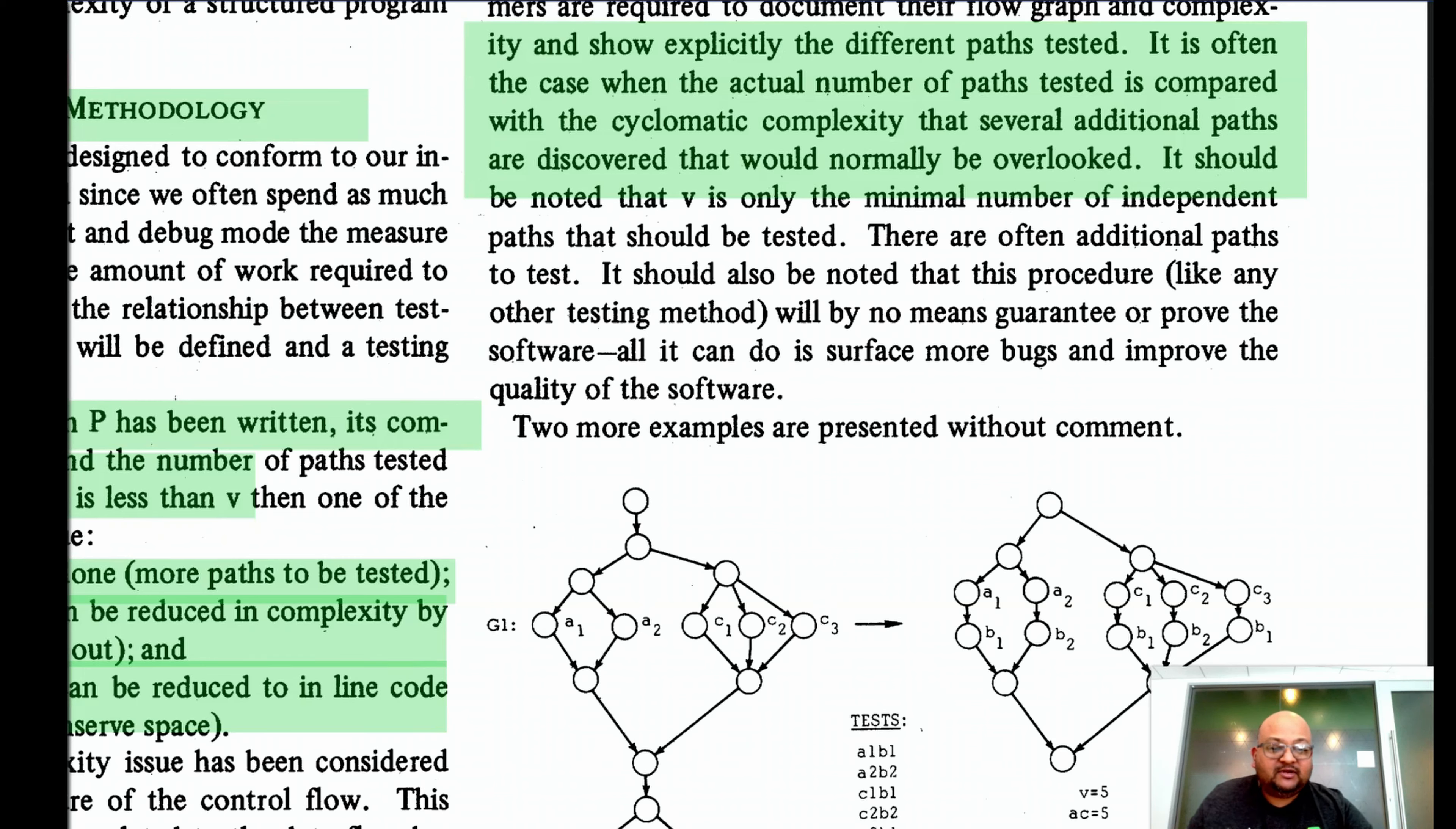Another critique often leveled at cyclomatic complexity is that if you take one program and break it into distinct functions or methods, that will actually increase your cyclomatic complexity because of the 2P term in the formula. And that is often the reason that in industry, you see cyclomatic complexity usually being used only at the level of a method or a function, not at a whole program level.